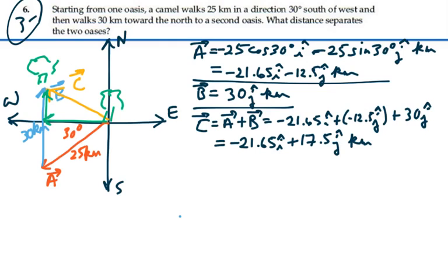We want to find the magnitude of this vector to find the distance between the two oases. So the magnitude of vector C is going to be equal to negative 21.65 squared, which would be a positive quantity,